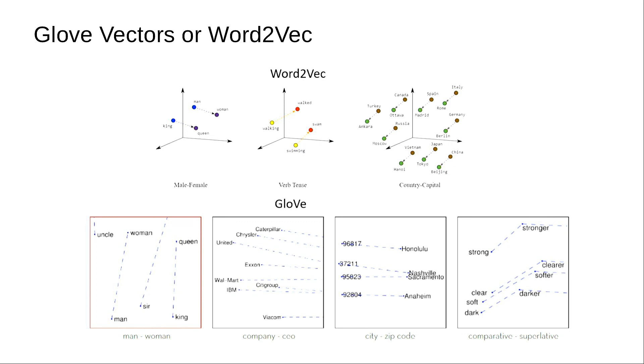So the question is: cosine distance makes sense if the vector used is created out of term frequency or TF-IDF measurement. But if the vectors created are word embeddings as a result of training a neural network, does it still make sense to use cosine in high dimensional space?